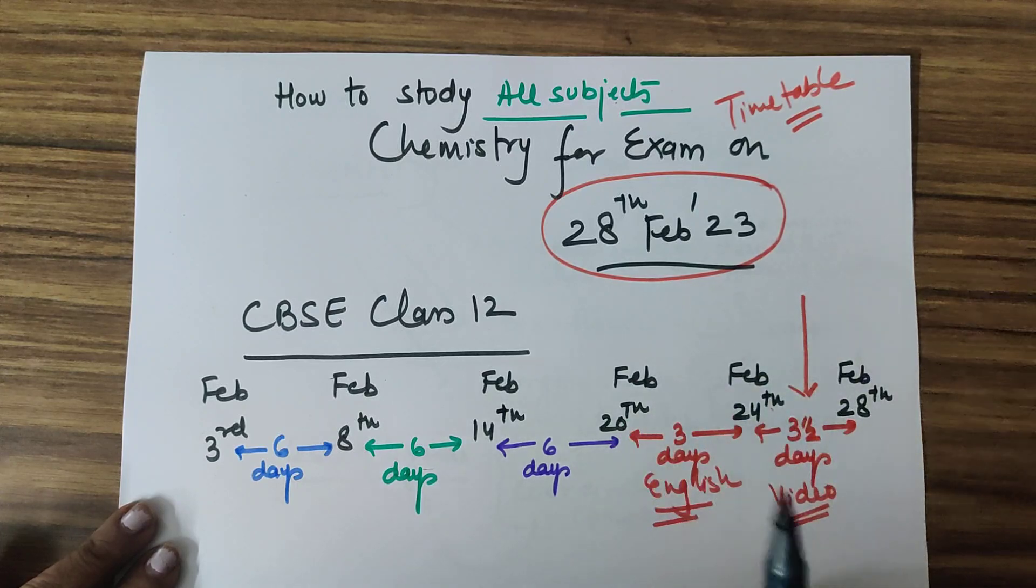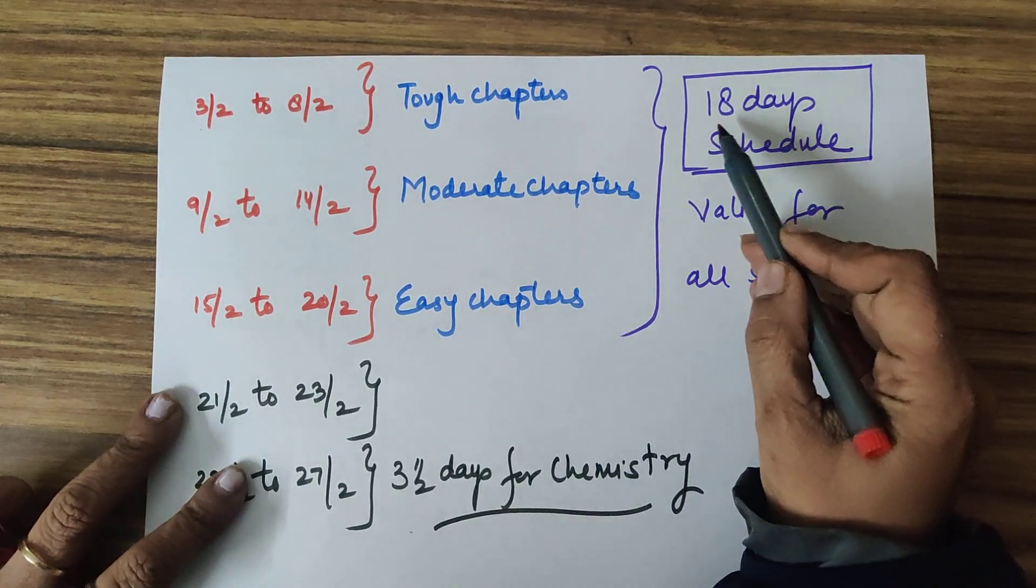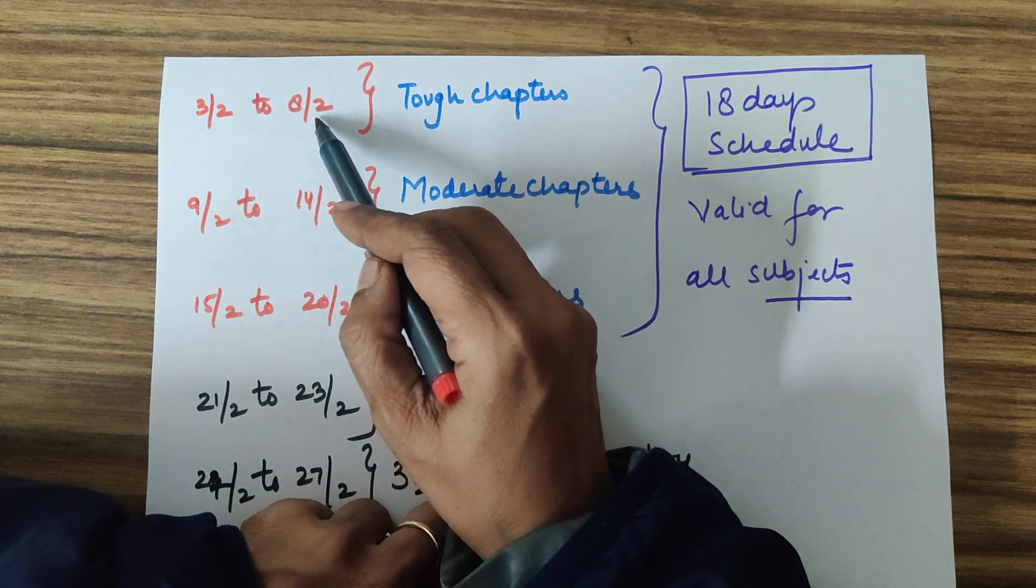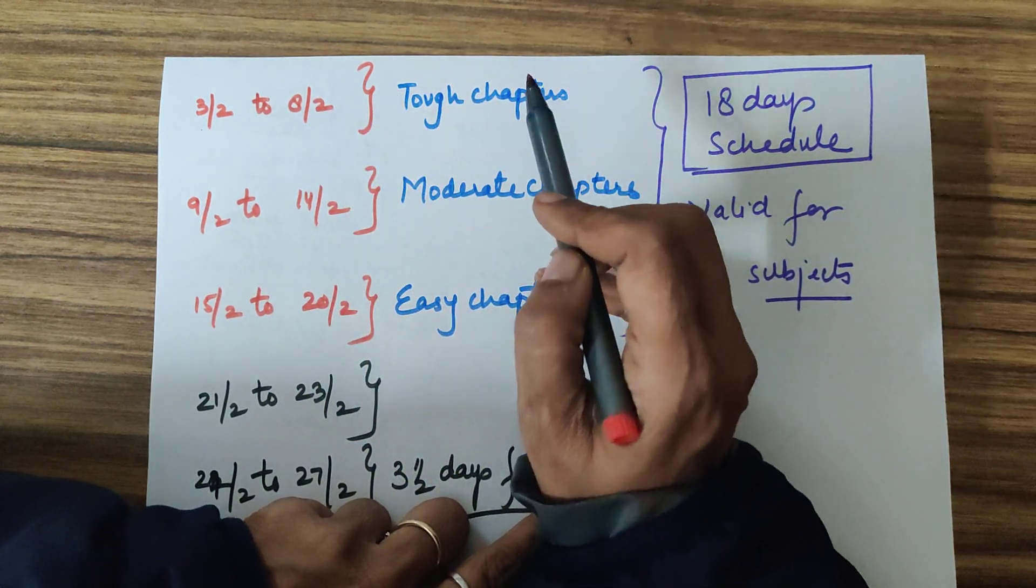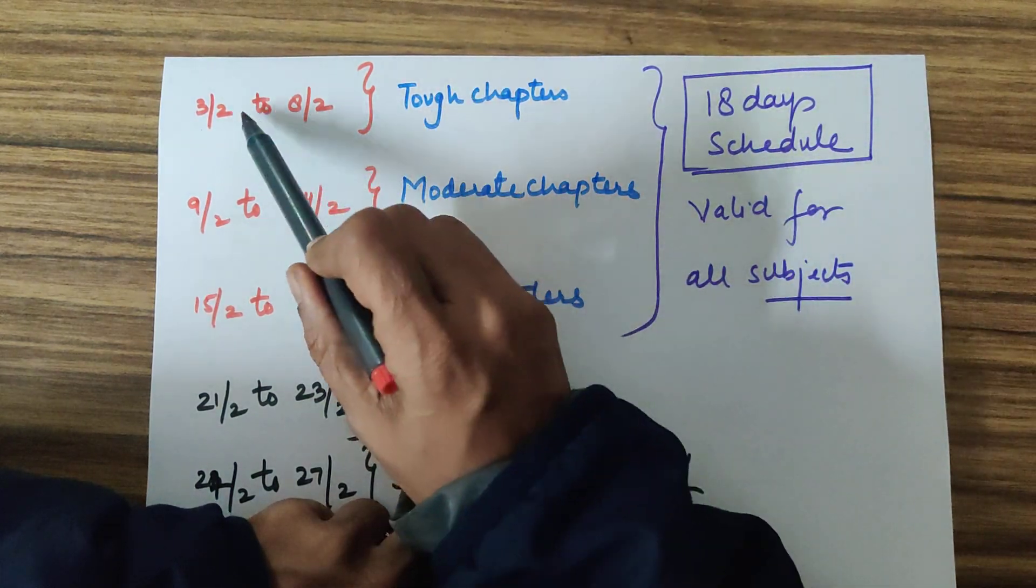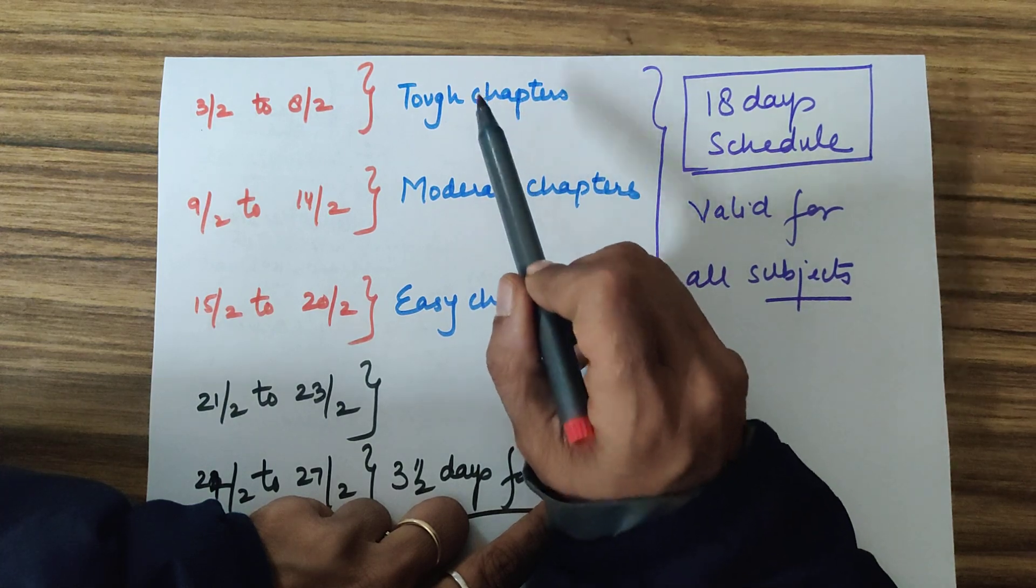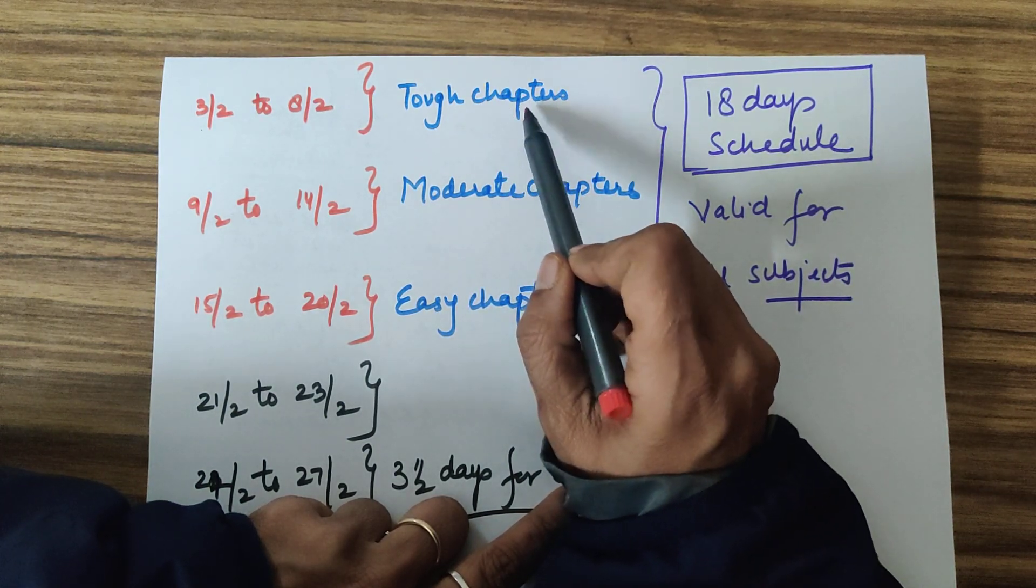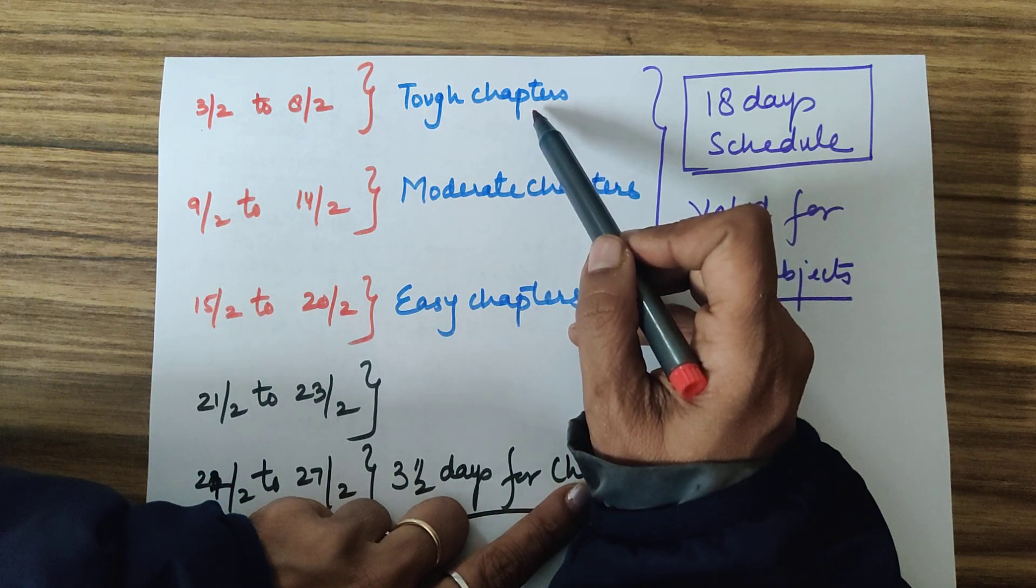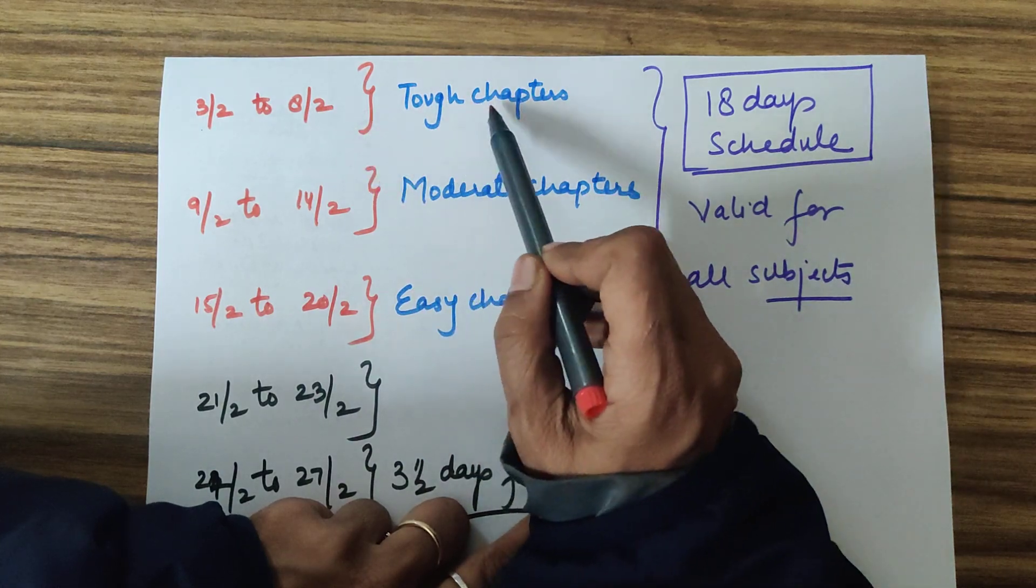As of now, you have 18 days. You need to schedule and this is valid for all the subjects. From the first six days, you need to do tough chapters for every subject. This coming week means please target the tough chapters for all the subjects which you think is a difficult area. Which time you will have to do that is up to you. If you like reading in the morning or late, that is your call. Just see to it that every subject which has tough portions, you will have to do that.